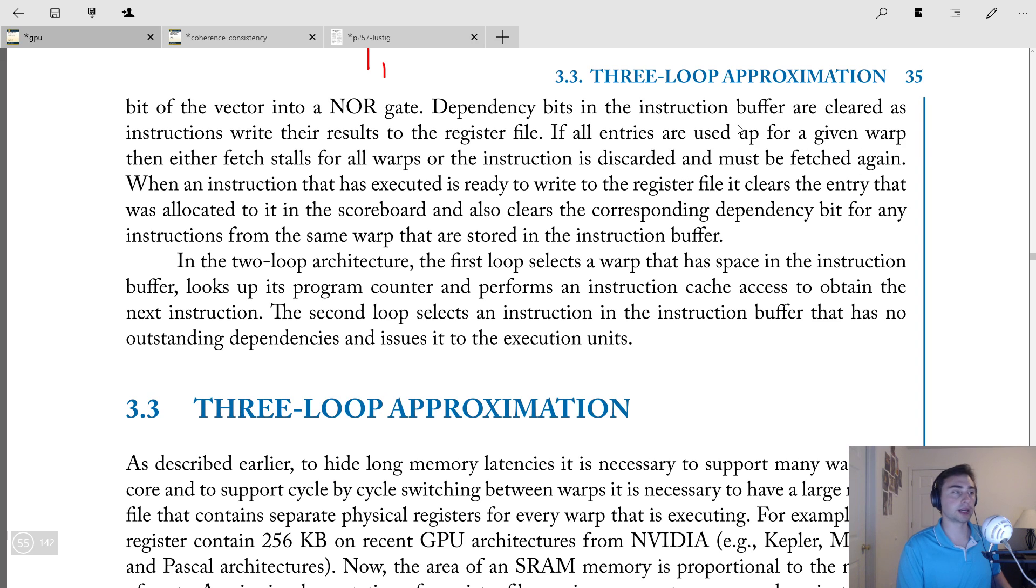So if all entries are used up for a given warp, either fetch stalls for all warps or the instruction is discarded and must be fetched again. So you can just throw away an instruction and say, okay, just try and get it again. So when instruction that is executed is ready to write to the register file, it clears the entry that was allocated to it in the scoreboard. And also clears the corresponding dependency bit for any instructions from the same warp stored in the instruction buffer. So it has to clear two things. So it has to clear here's the scoreboard that contains the dependency information. And then all the little bit vectors that may depend on that instruction got to clear those as well.